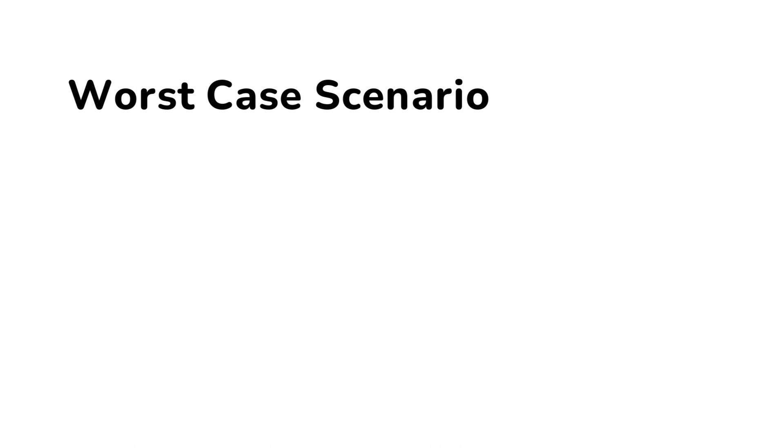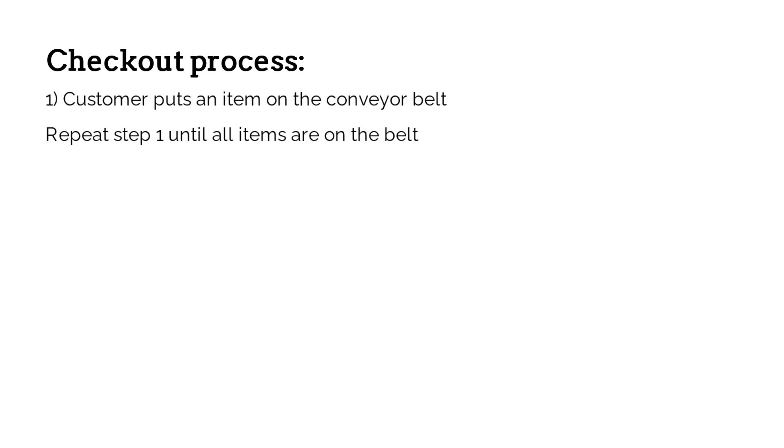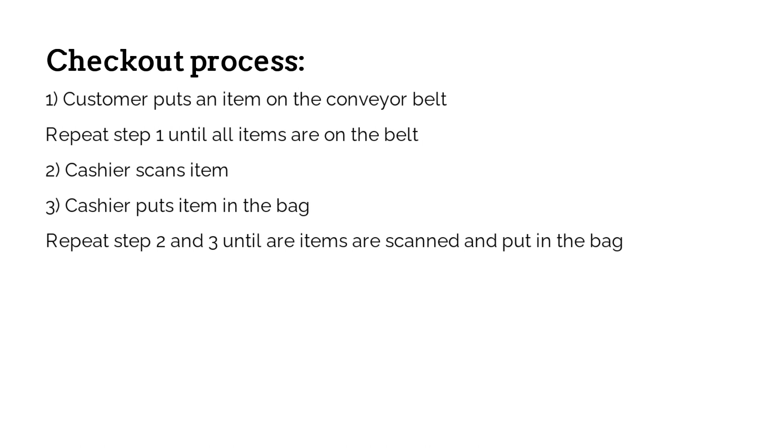Imagine a grocery store with only one cashier. The checkout process might look like this. The first step would be the customer puts an item on the conveyor belt, and this step will keep repeating itself until all grocery items are on the belt. Then the cashier will scan the item and she will put it in a bag. These two steps will keep repeating itself until all items are scanned and put in a bag. The cashier will tell the customer the total price and the customer will then pay for the items.